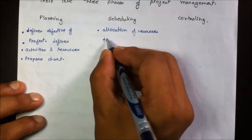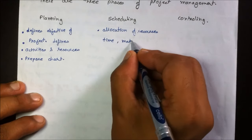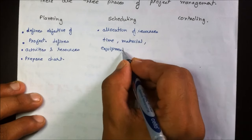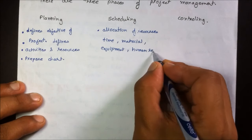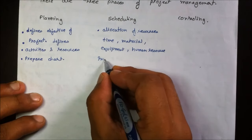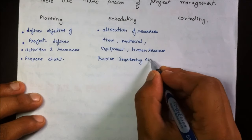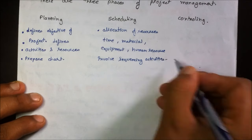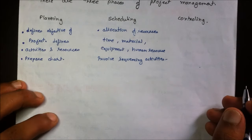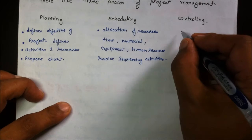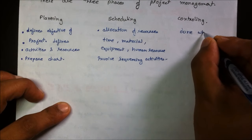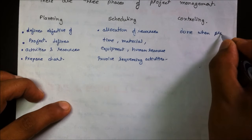Scheduling is the allocation of resources such as time, material, equipment, and human resources in an appropriate manner such that it results in efficient working. Scheduling is also involved in the sequencing of activities.